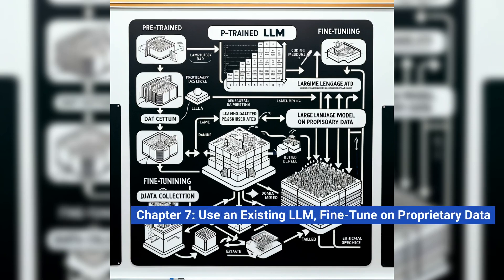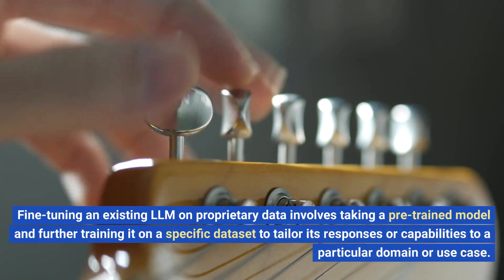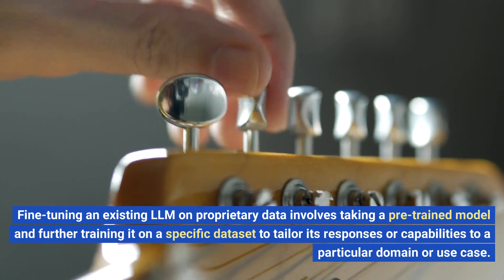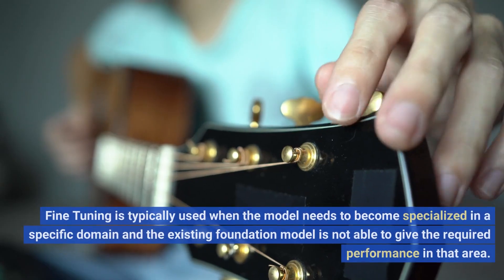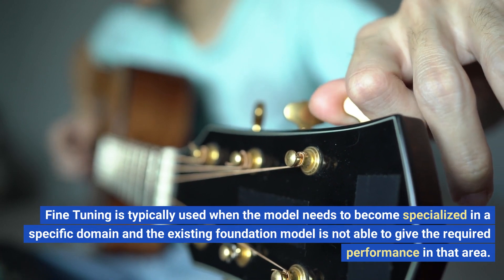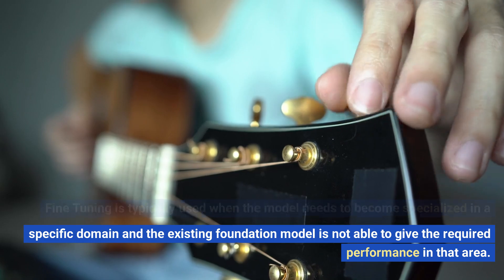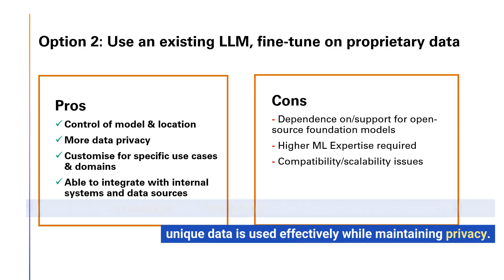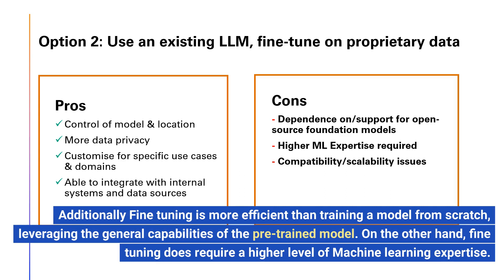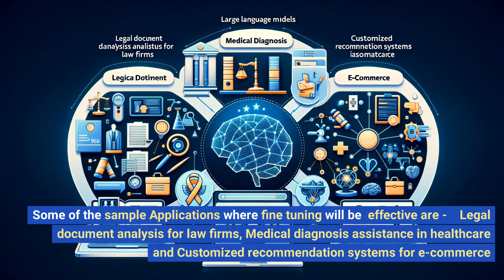Chapter 7: Use an Existing LLM — Fine-tune on Proprietary Data. Fine-tuning an existing LLM on proprietary data involves taking a pre-trained model and further training it on a specific dataset to tailor its responses to a particular domain or use case. It's typically used when the existing foundation model cannot deliver the required performance in a specialized area. Fine-tuning allows businesses to use their unique data effectively while maintaining privacy, and is more efficient than training from scratch. However, it does require a higher level of machine learning expertise. Sample applications include legal document analysis for law firms, medical diagnosis assistance in healthcare, and customized recommendation systems for e-commerce.